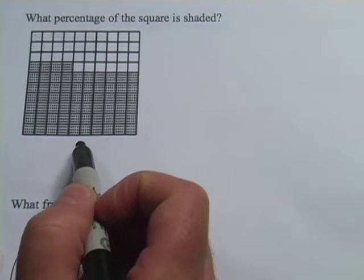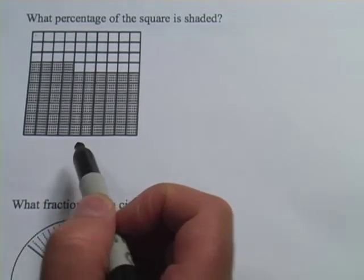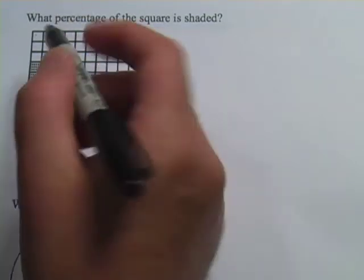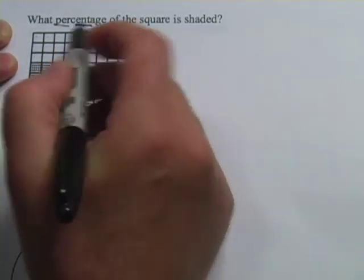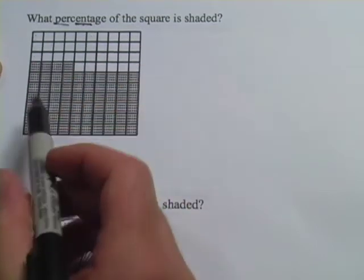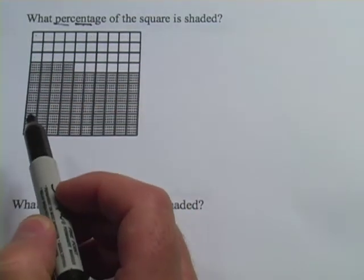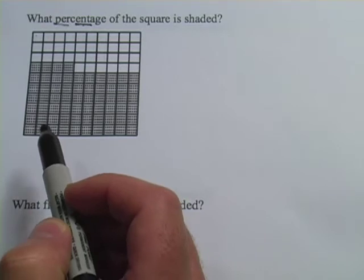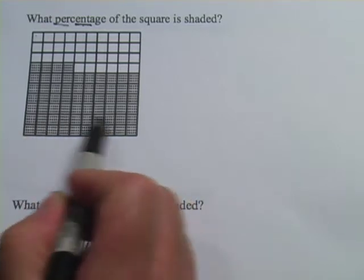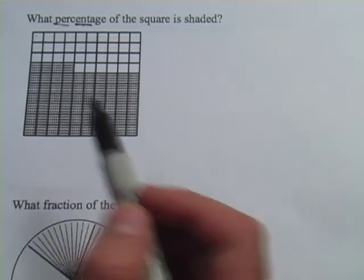And it's asking what percentage of the square is shaded. And that actually makes it really easy, because percentage—cent means 100—and really a percent is how many out of 100. So I just have to determine how many of these boxes are shaded, and that's going to be my percent.